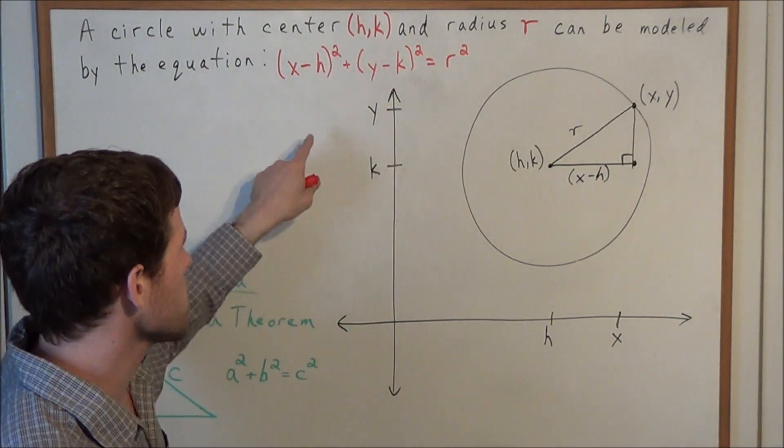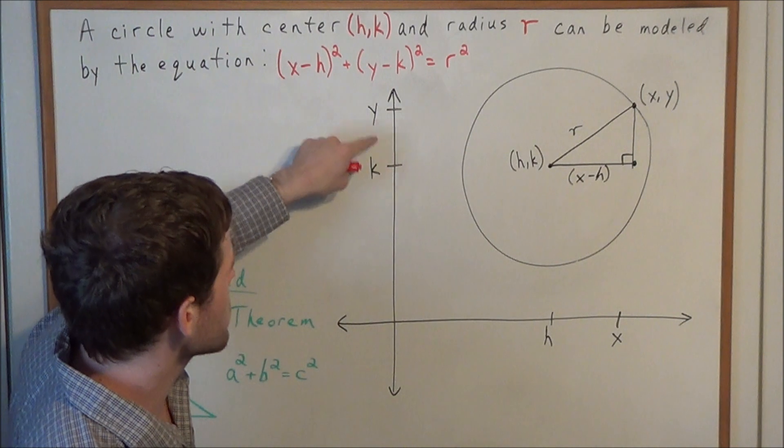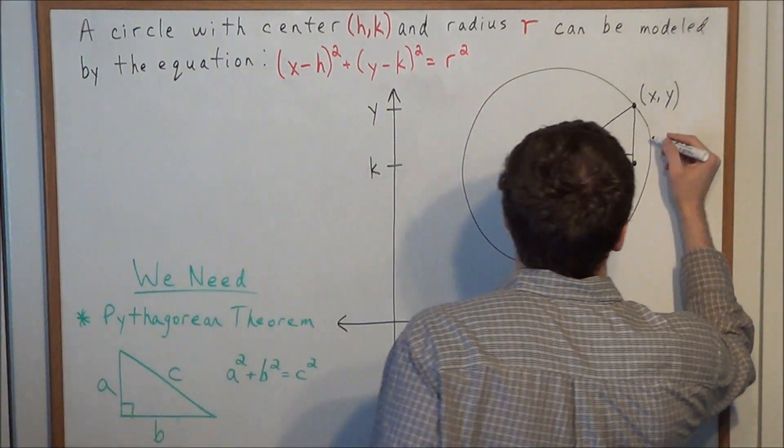And now we do the same thing for the vertical leg. The vertical leg is the distance between these y values. So we could call this vertical leg y minus k.